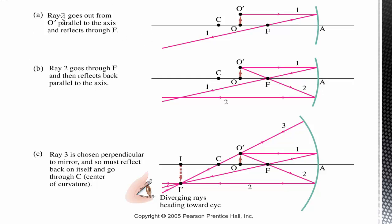If we want to figure out what's going to happen to the image produced in this mirror for objects that aren't coming from infinity — any far-away object produces an image at the focal point — but if I have a closer object, this little arrow represents my object, you can think of it as a little candle. If we want to figure out where the image is, we can trace some different rays, and where those rays converge tells us where the image is located. We're going to consider rays coming off the top, and we only need two to find where they converge, but we look at three as an additional check.